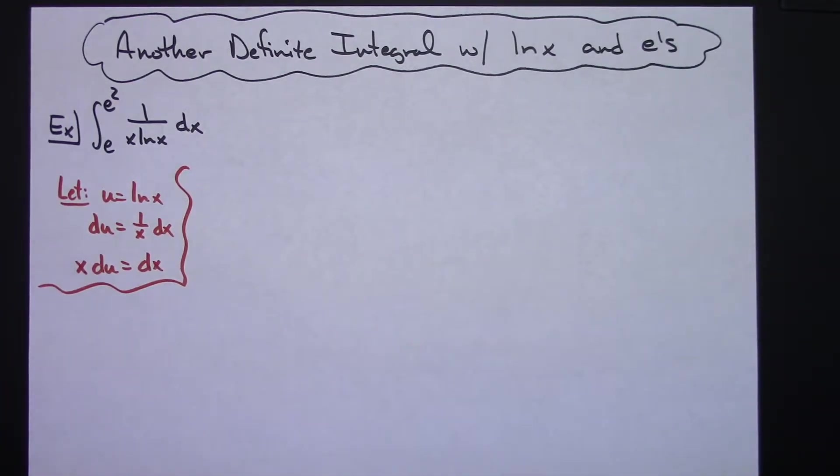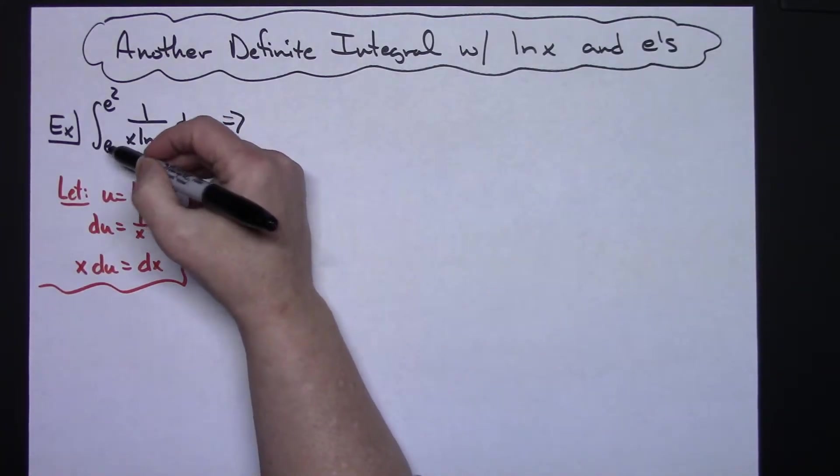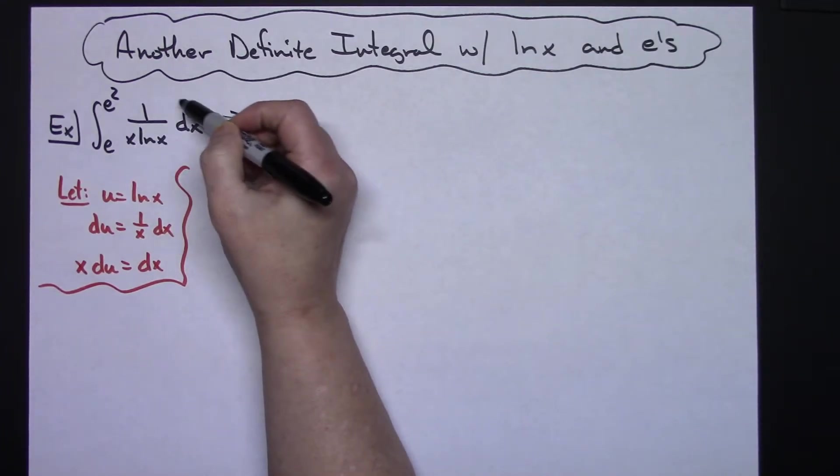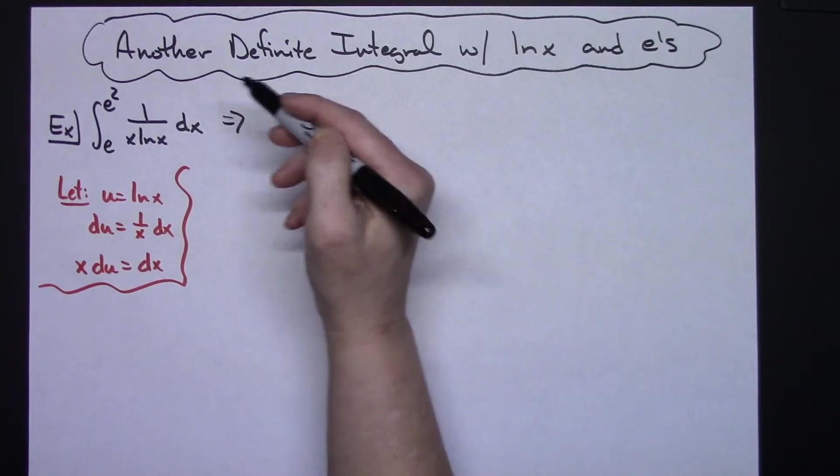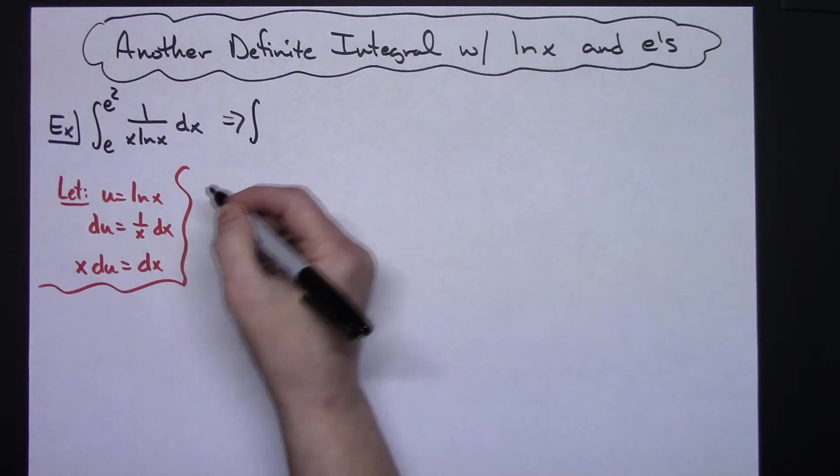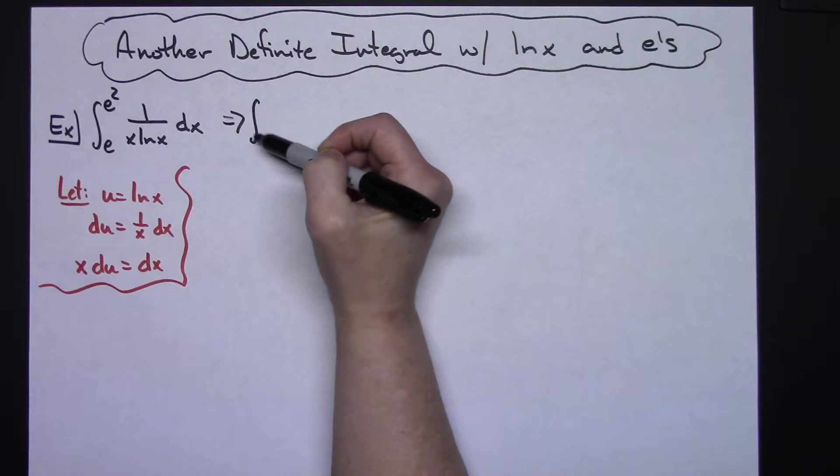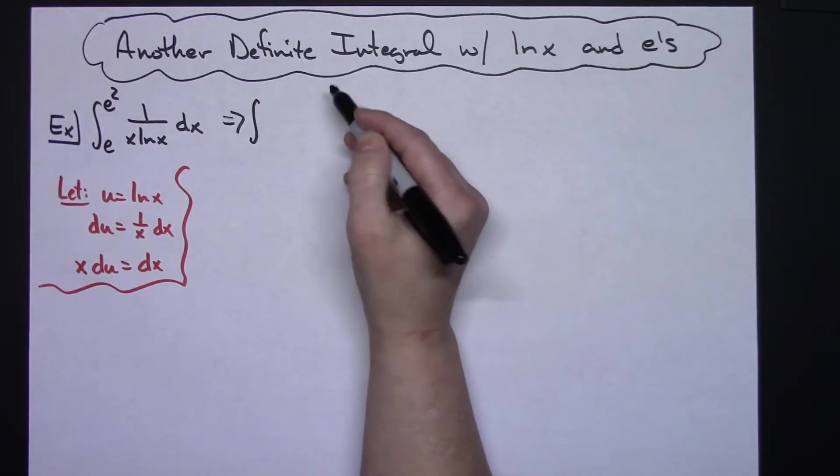Now I'm going to take away my limits of integration because this equation is in terms of x, so these are limits of integration for x. I'm going to have a mixture of x's and u's, so I definitely do not want limits of integration for x on this part of the problem.